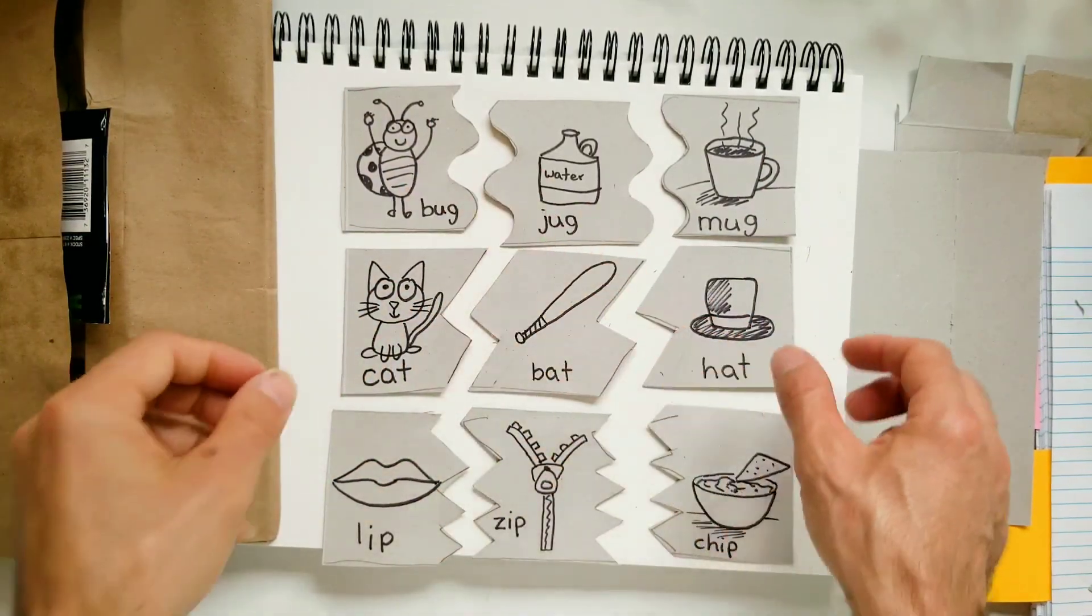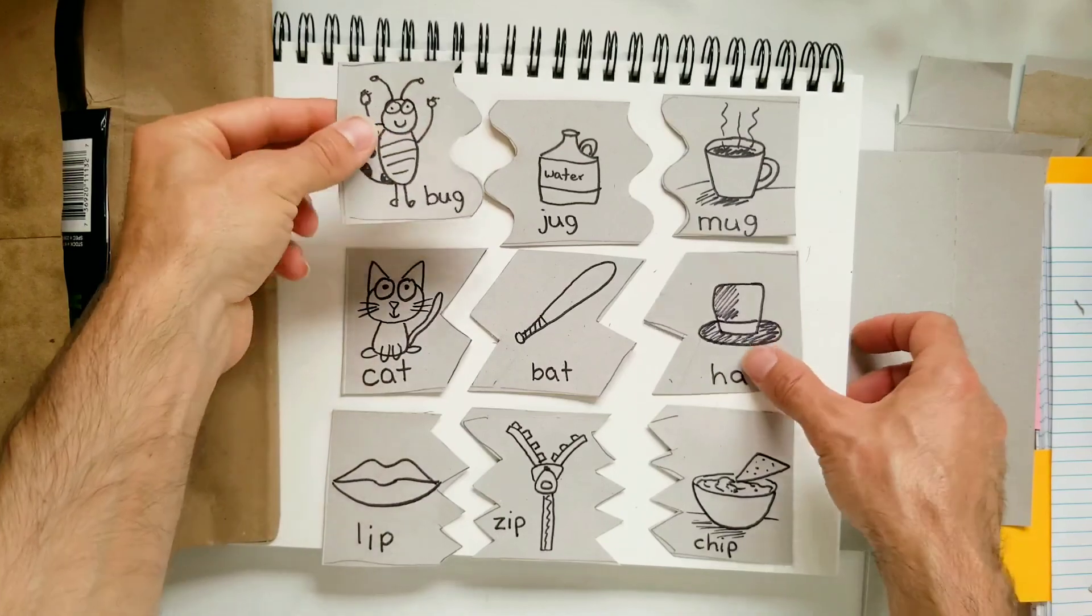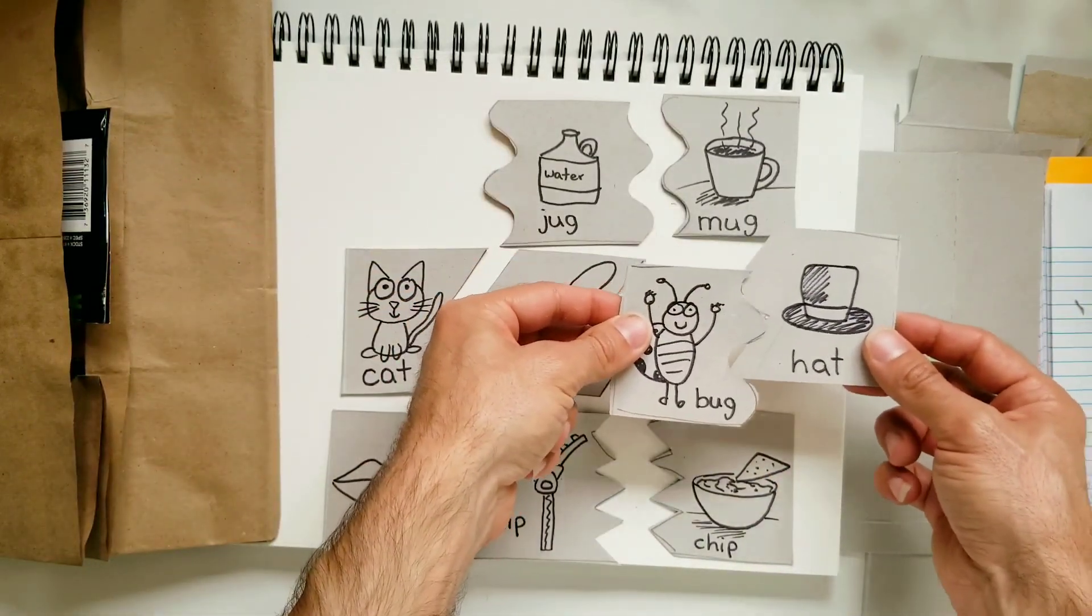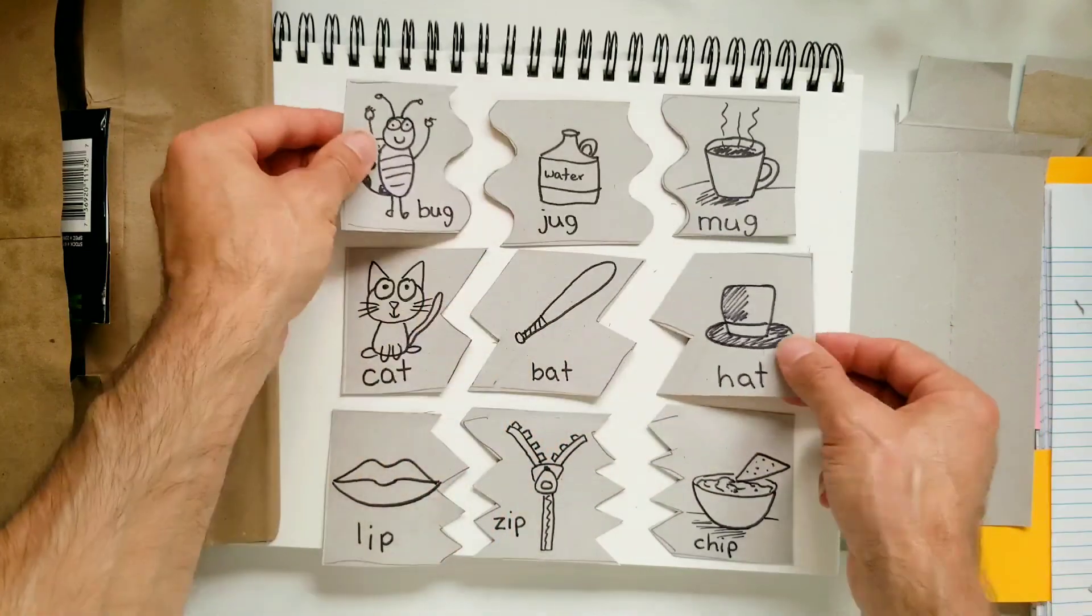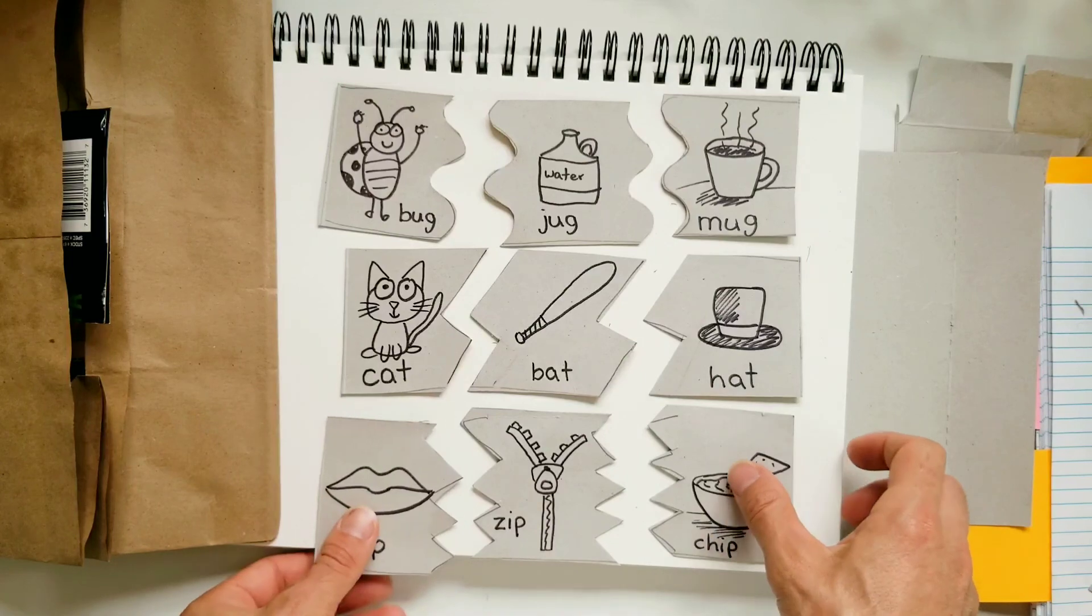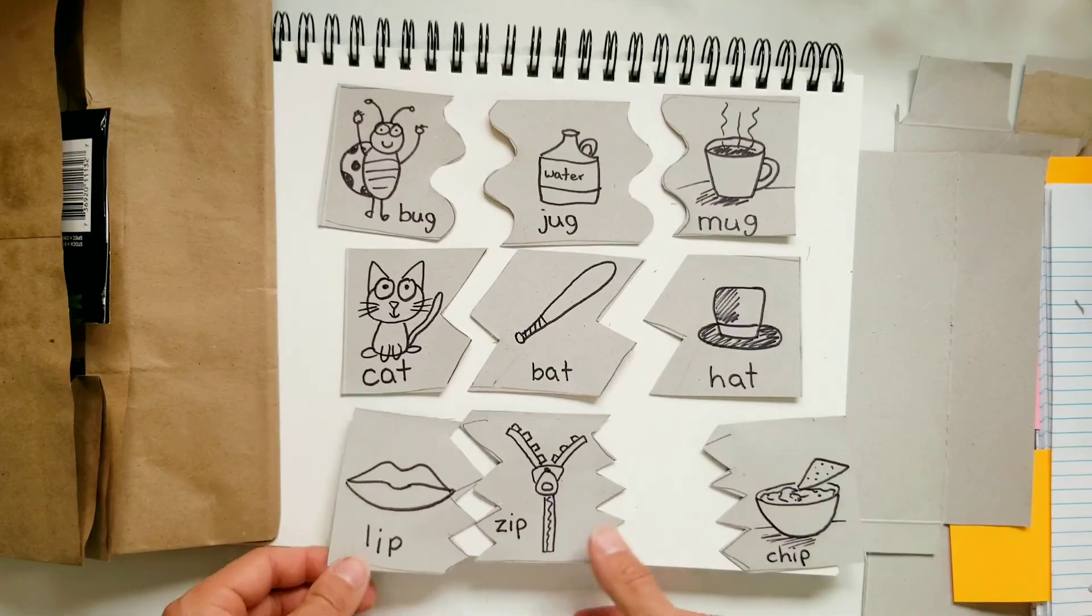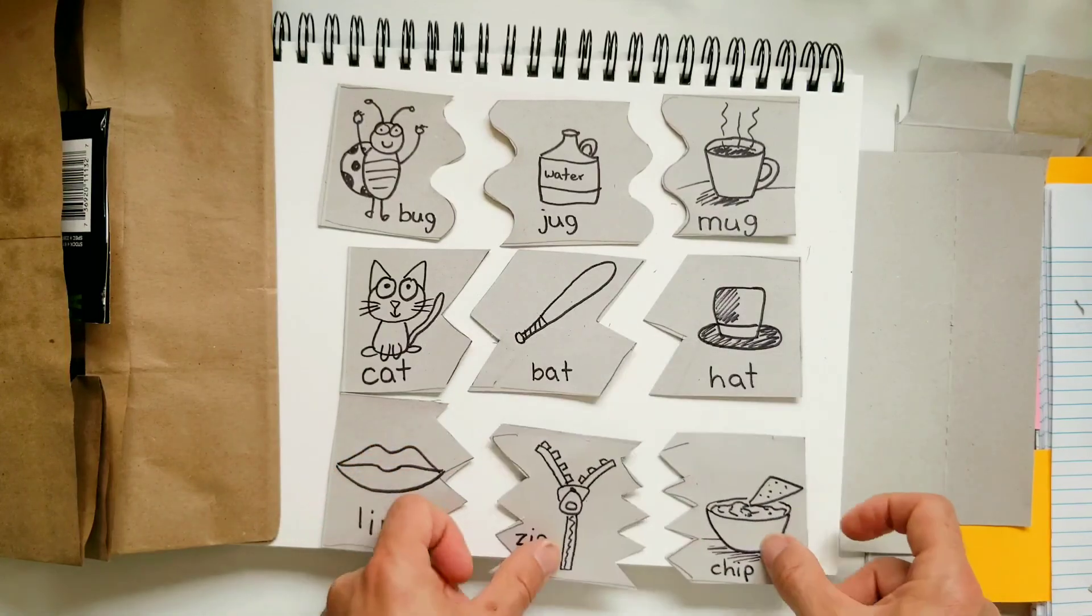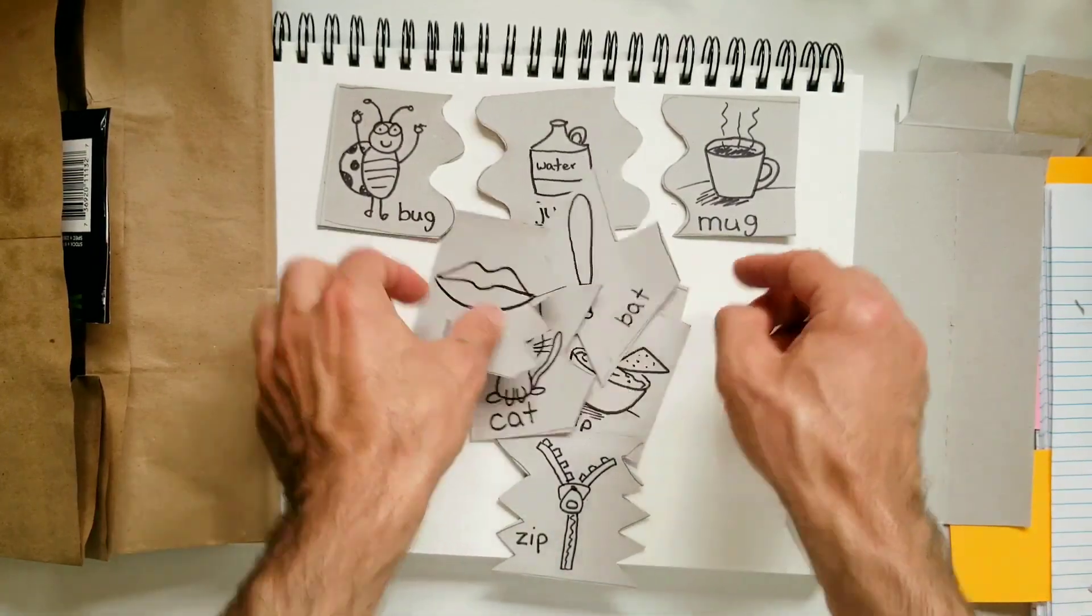So now you see how all these fit together. Now watch if I try and say bug and hat. Does that rhyme? No, it doesn't rhyme. And look, it doesn't fit together. So only the ones that rhyme will fit together.